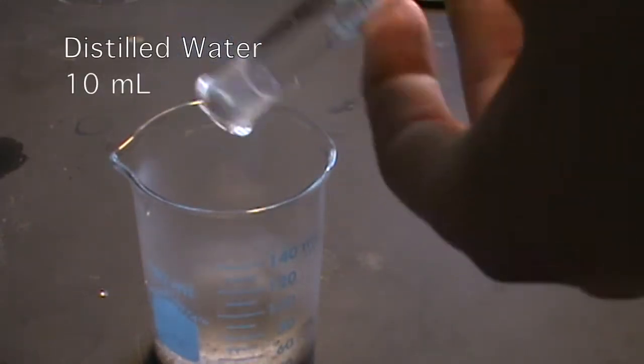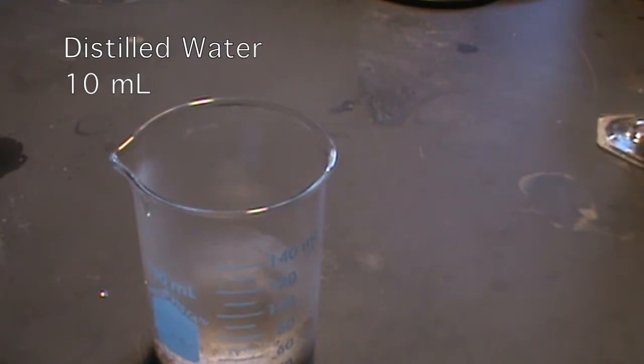An additional 10 milliliters of distilled water was added because the slurry was too thick to swirl properly.